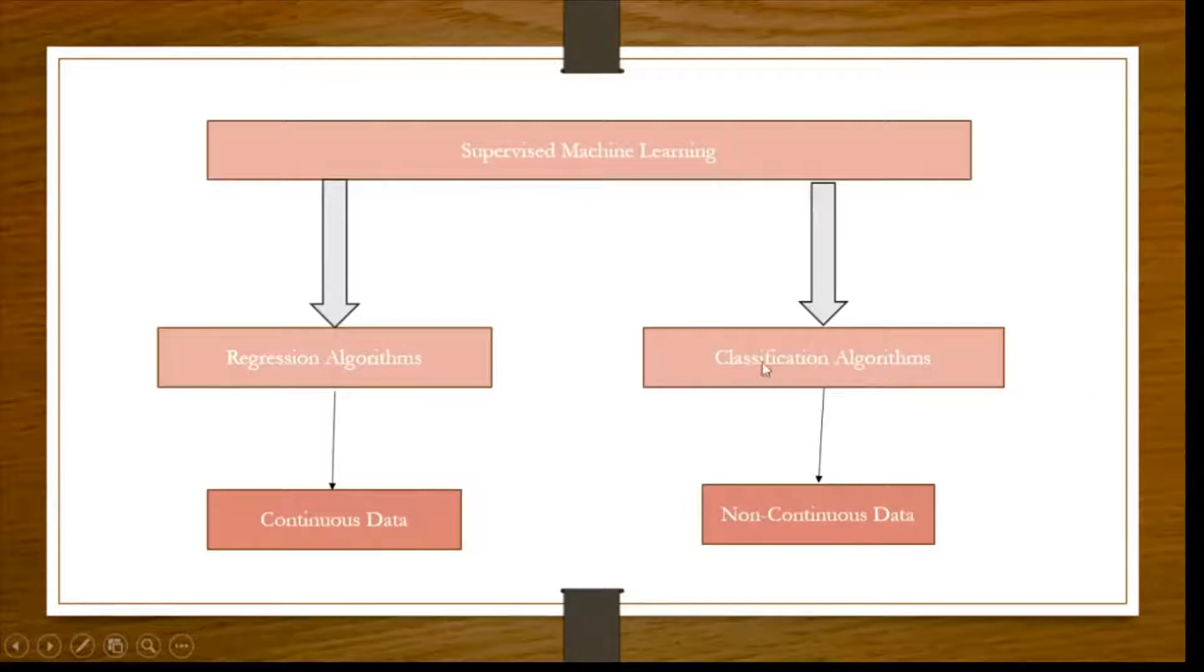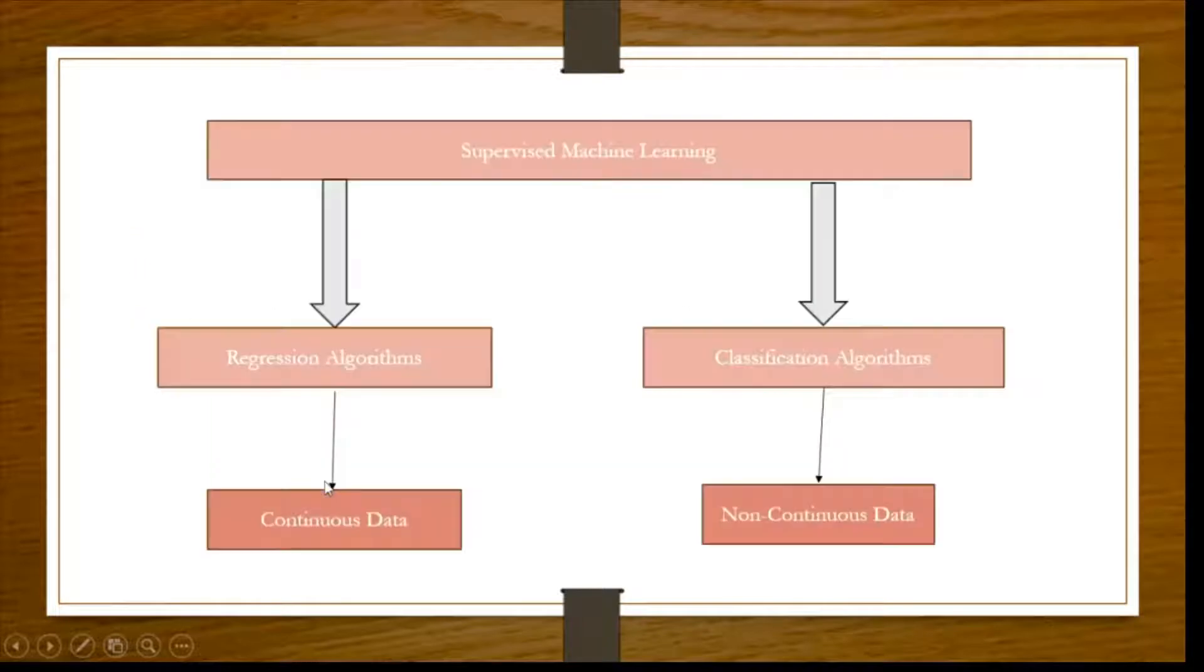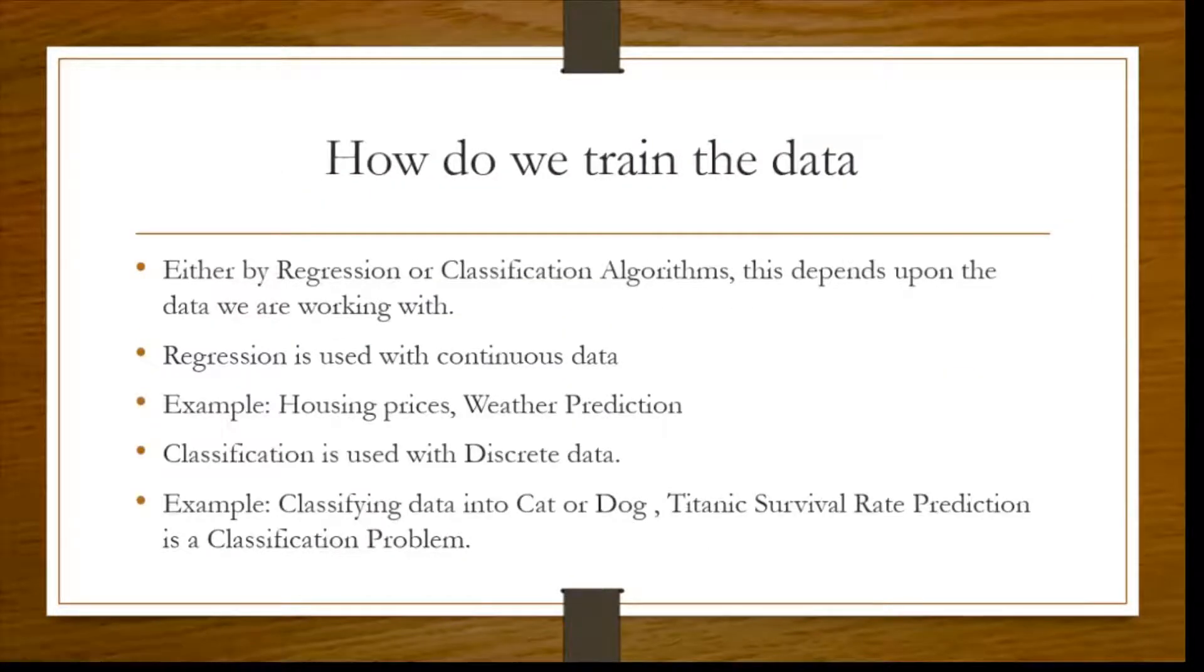So when I talk of classification, this deals with discrete or non-continuous data. You know very clearly it will fall in which class. And regression algorithms or regression problems deal with continuous data. For example, the housing data prices, the weather predictions.